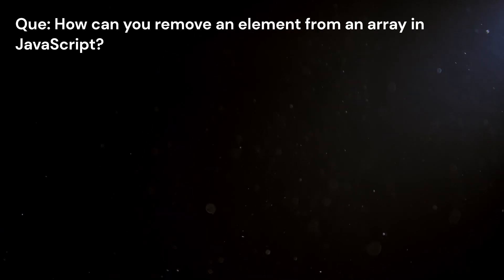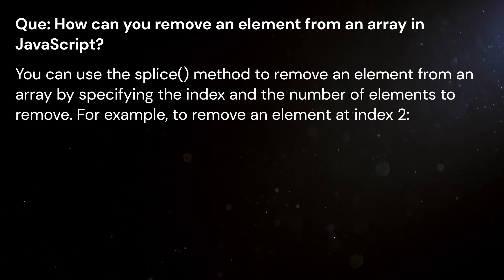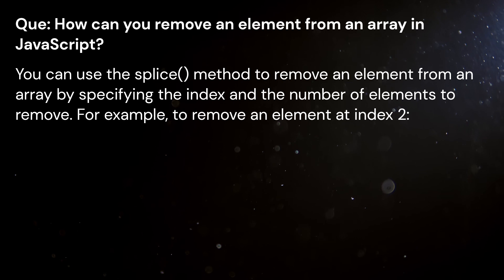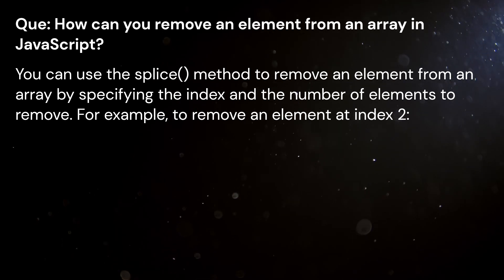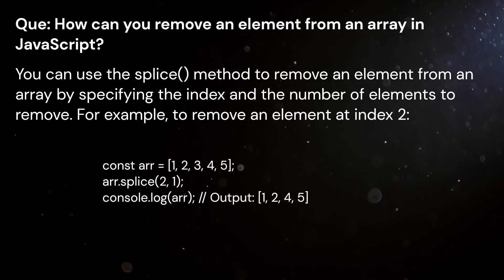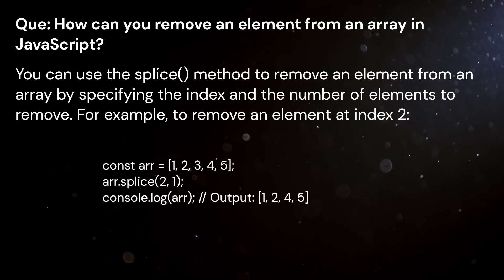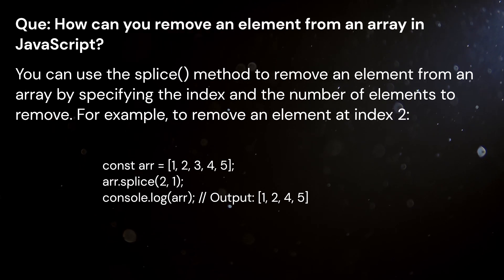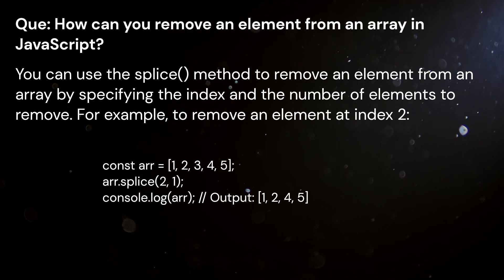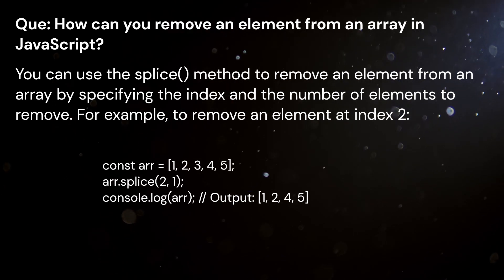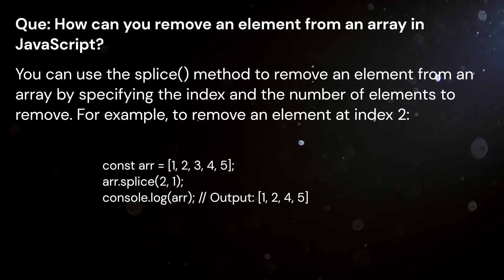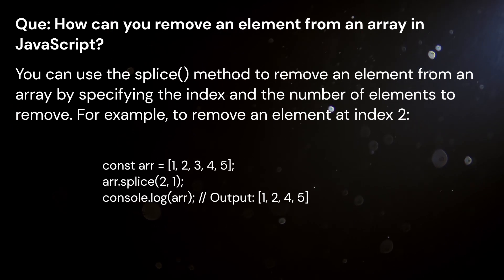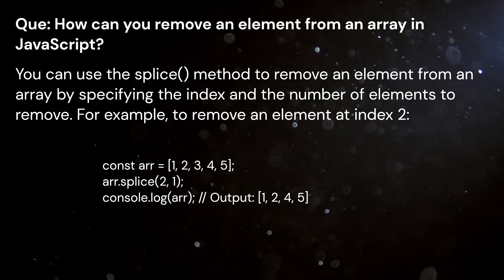Question: How can you remove an element from an array in JavaScript? Answer: You can use the splice method to remove an element from an array by specifying the index and the number of elements to remove. For example, to remove an element at index 2.